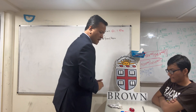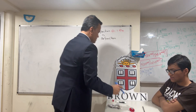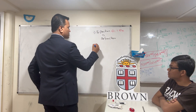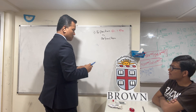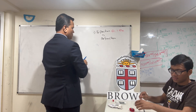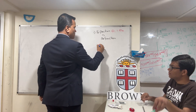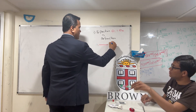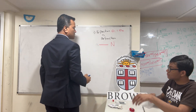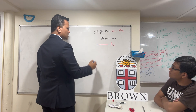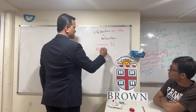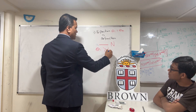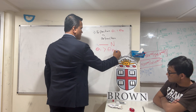If light enters from a small n to a big N, then theta incident is greater than theta refracted.